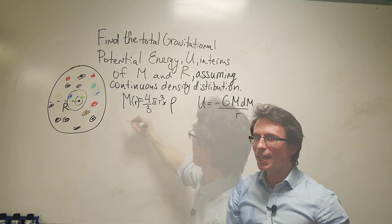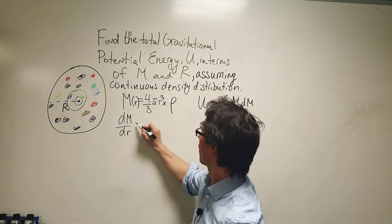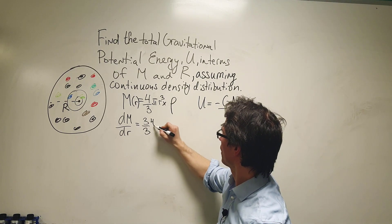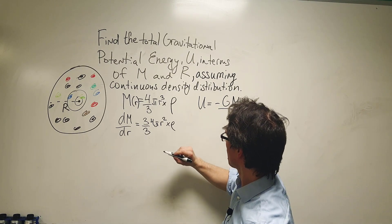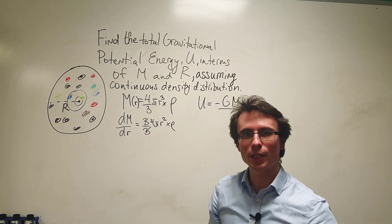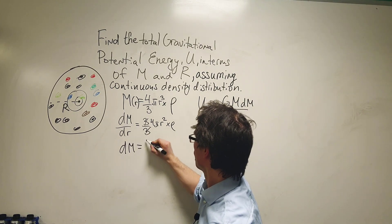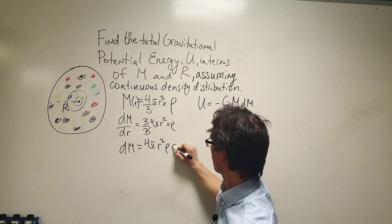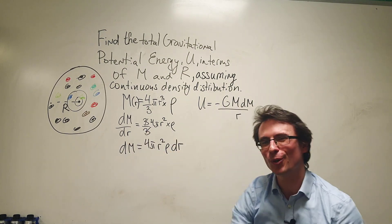In order to find DM, let's differentiate with respect to R. DM/DR is going to equal (4/3) — the 3s cancel, giving 3 over 3 — so 4πR² times the density. Rearranging for DM: treating these as infinitesimal quantities, we get that DM equals 4πR² times the density times DR. So we have an expression for DM.